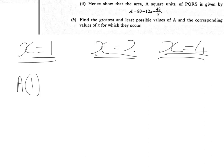So, A of 1 equals 80 minus 12 bracket 1 minus 48 over 1. So, that's 80 minus 12 minus 48, and that'll give me an area of 20.